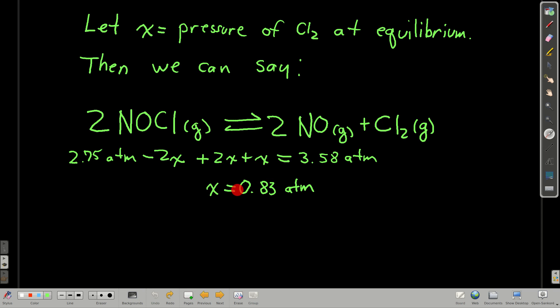So the total pressure, this is really Dalton's law of partial pressures from way back, is just 2.75 atmospheres that we started with minus 2X, the amount of this we lost, plus 2X, the amount of this that we gained, plus X, the amount of this that we gained, which ends up just being 2.75 atmospheres plus X. These two cancel. Anyway, you solve this for X and you should get 0.83 atmospheres.